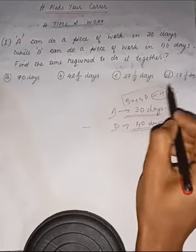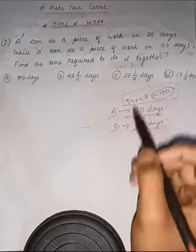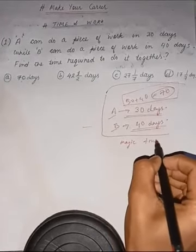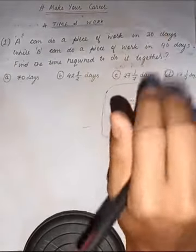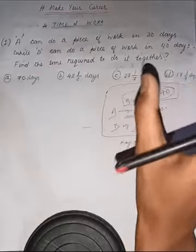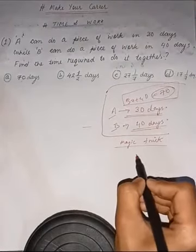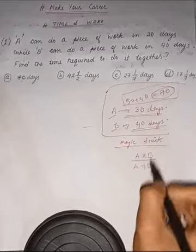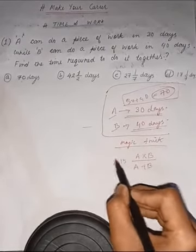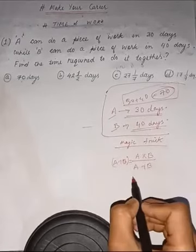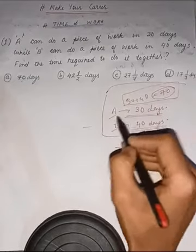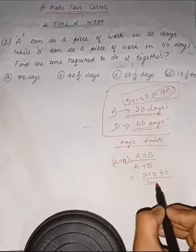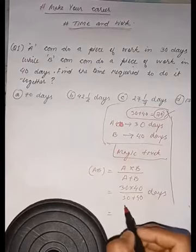So the formula we have is a magic trick. In just ten seconds we can solve this question. The formula is: A into B divided by A plus B. So A into B over A plus B.